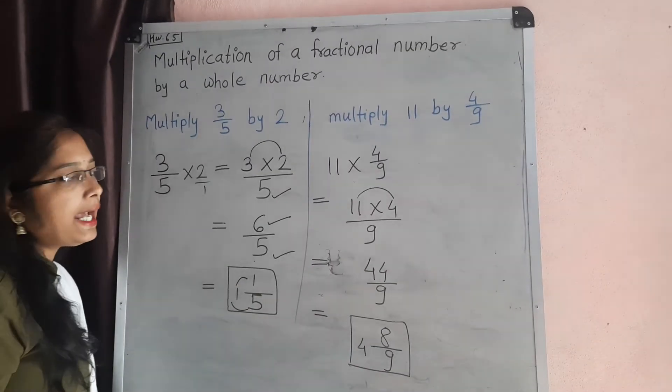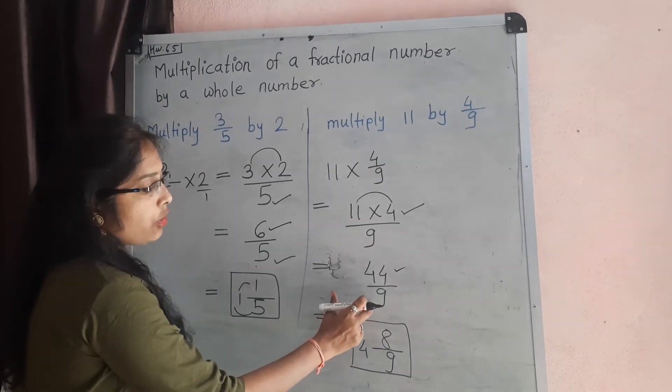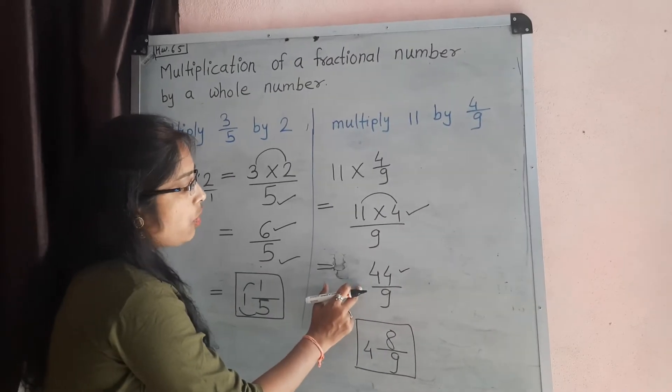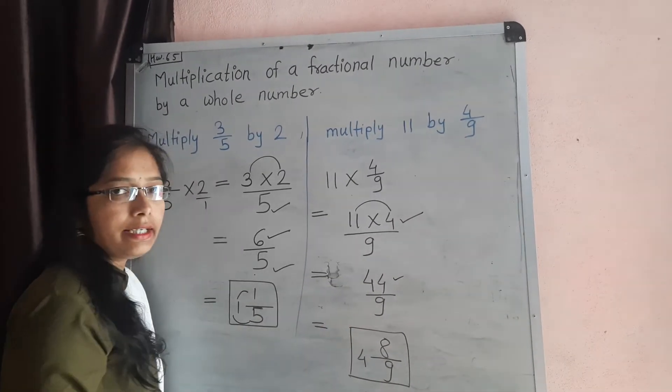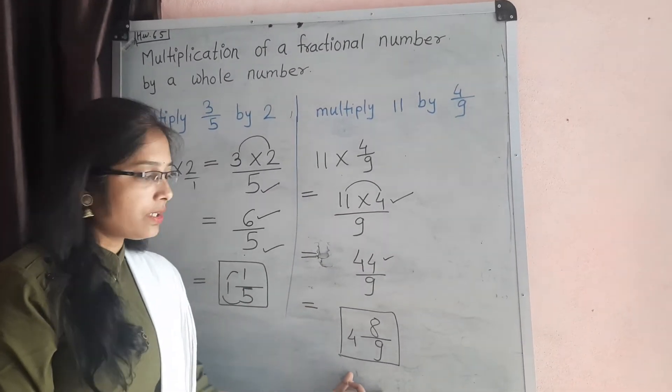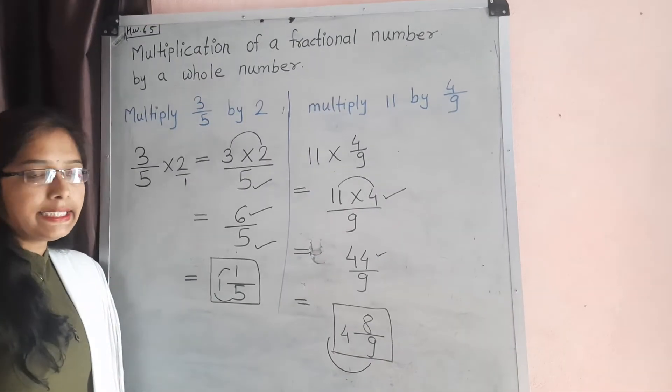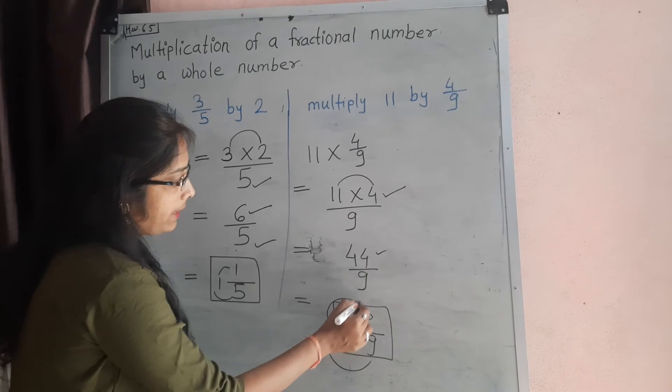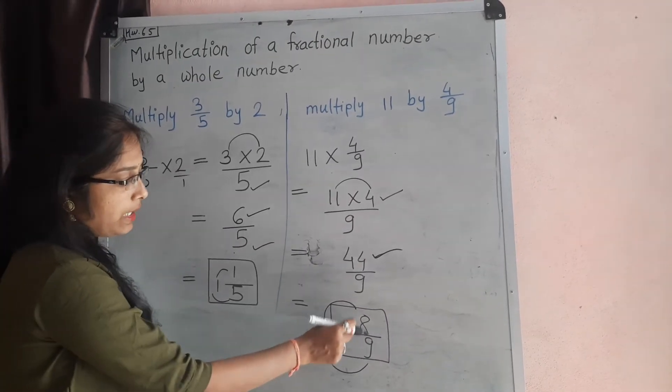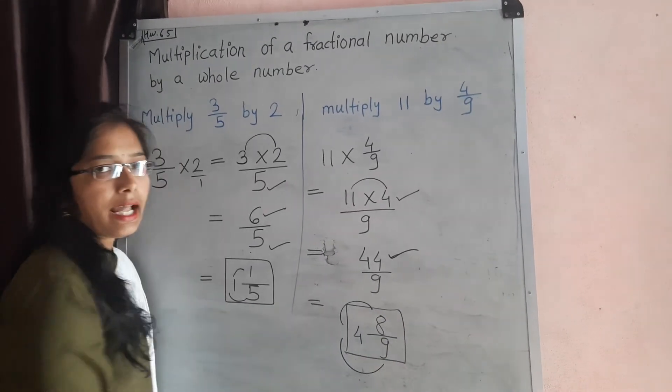So just multiply that: 11 times 4 is 44 and write down that denominator 9 like that as it is. So here also that numerator is bigger than denominator. So again we just convert into mixed fraction. How? 9 times 4 is 36, and 36 plus 8 is 44, means 4 and 8/9 is our answer. 4 and 8/9.